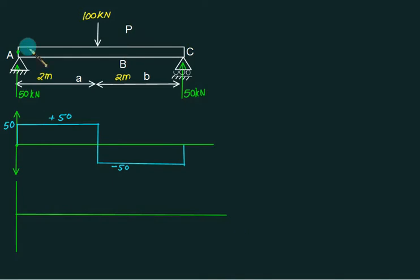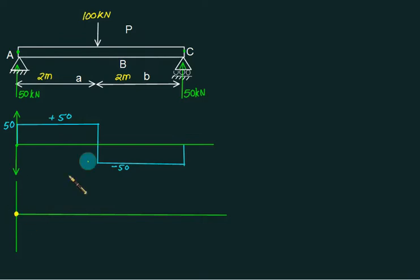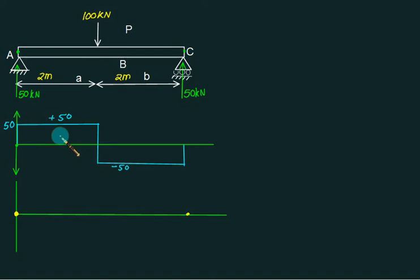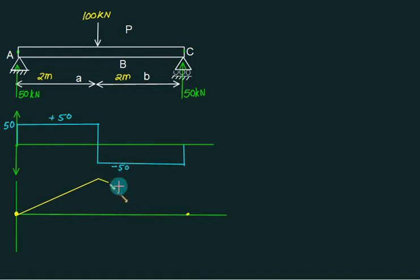At the left hand side there is no force acting, and to the right hand side of C there is no force acting. So there is no bending moment at point A and no bending moment at point C. First mark zero bending moment at point A and zero bending moment at point C. In this first portion the shear force is constant and a positive value, so you have to draw a line with a positive slope — the area of this figure represents the change in the bending moment diagram.